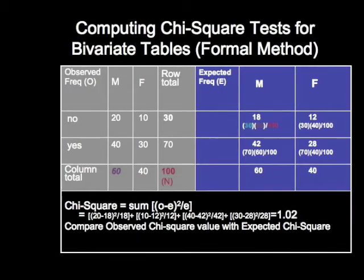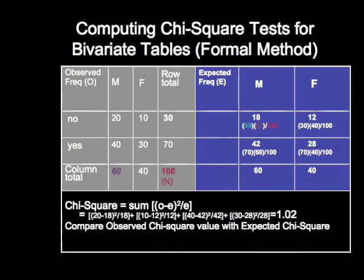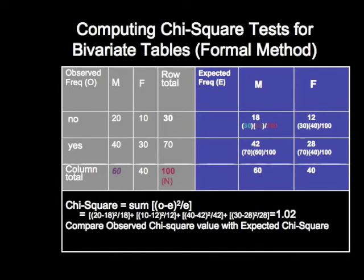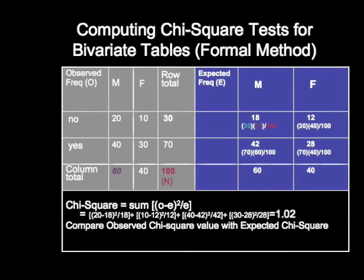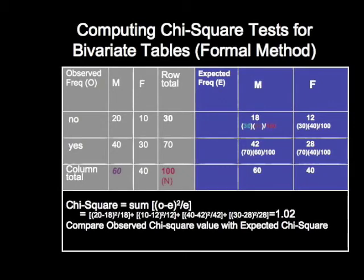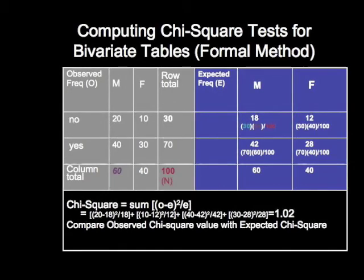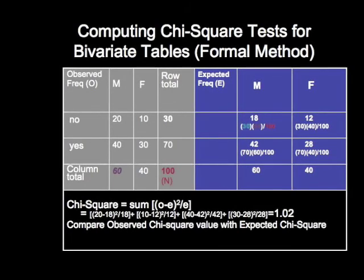When we compute a chi-square value, we take the observed minus expected value, square that value, and divide by expected. Summing up all those scores, we get a chi-square value. We compare our obtained chi-square value with our expected chi-square value and reach a conclusion about either rejecting or not rejecting the null hypothesis that these two variables are independent or not statistically related.